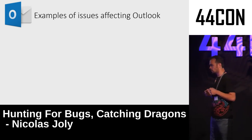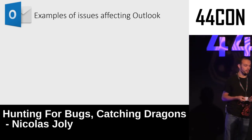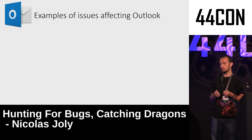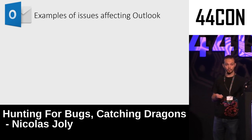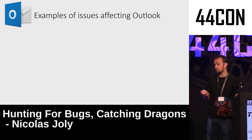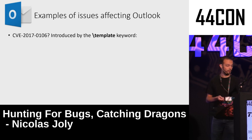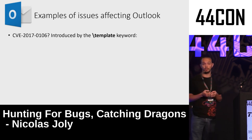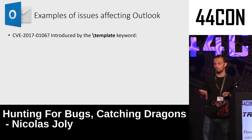Let's talk about examples of issues affecting Outlook. When I talk about RTF, I'm also talking about Word, because Outlook uses a Word core library to parse RTF emails. So anything affecting that Word RTF parser might also affect Outlook. That's why occasionally when there's an issue with RTF file format, the bulletin we publish is rated critical rather than important — because most of the time this code can also be reached from Outlook's preview pane.